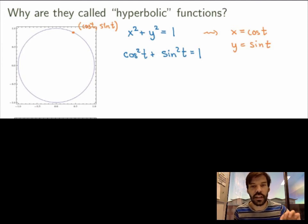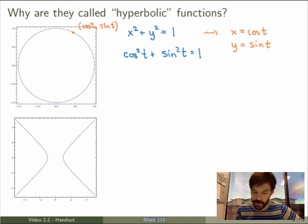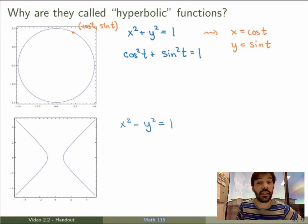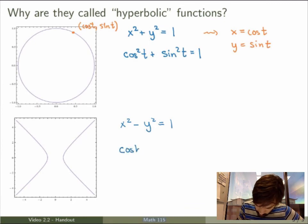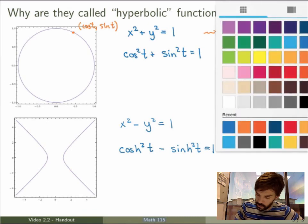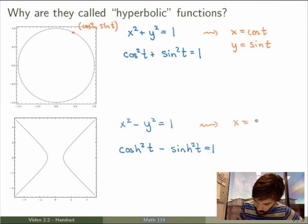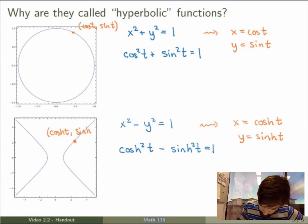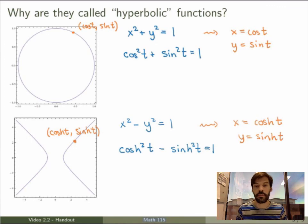It turns out that hyperbolic functions play the exact same role, but instead of a circle we have a hyperbola. The equation of this hyperbola is x² - y² = 1 — the sign is different. My identity for hyperbolic functions was hyperbolic cosine squared minus hyperbolic sine squared equals 1, so I can parameterize the hyperbola by setting x = cosh and y = sinh. The moral of the story is that hyperbolic functions play the exact same role for the hyperbola that trig functions play for the circle — that's why we call them hyperbolic functions.